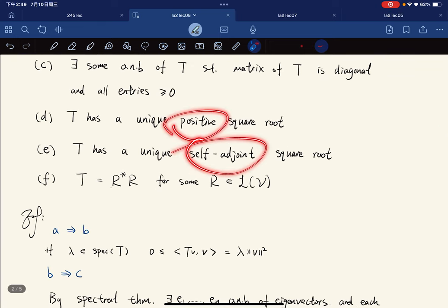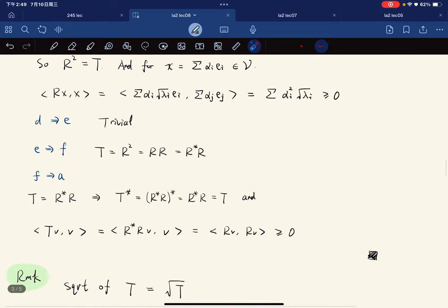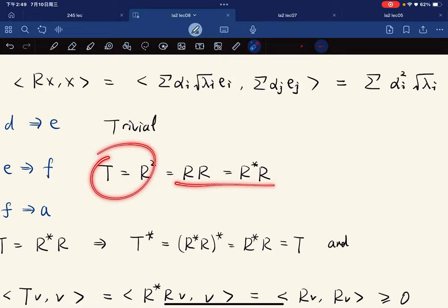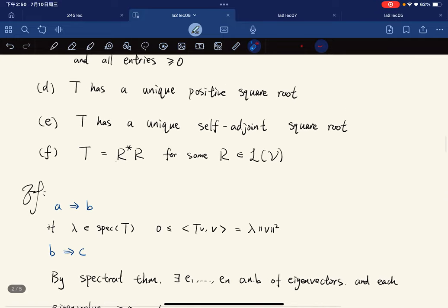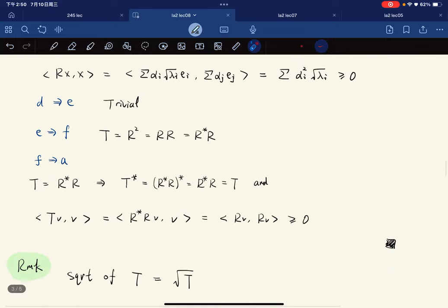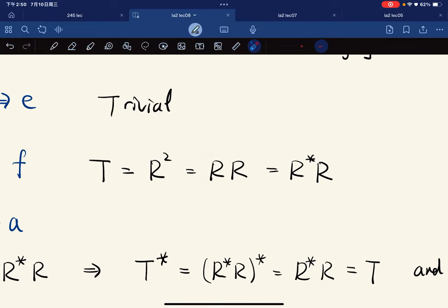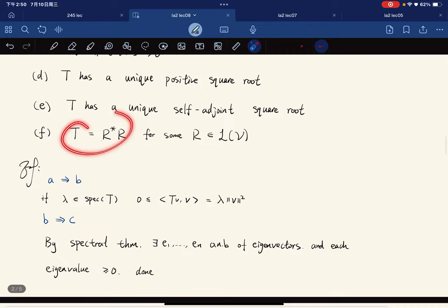E implies F: to show this, T equals R² equals RR equals R*R, because R is the square root and is self-adjoint, so we have R*R precisely in this form.